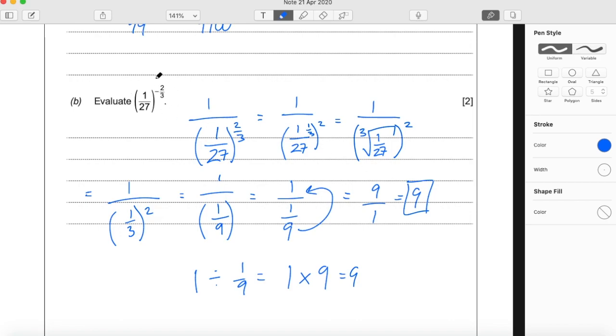It's 9. So that horrible thing just turns out to be 9. So that's question 13 part B.